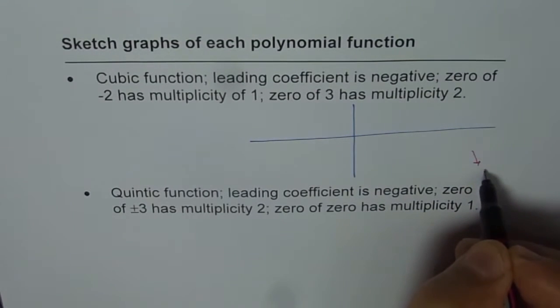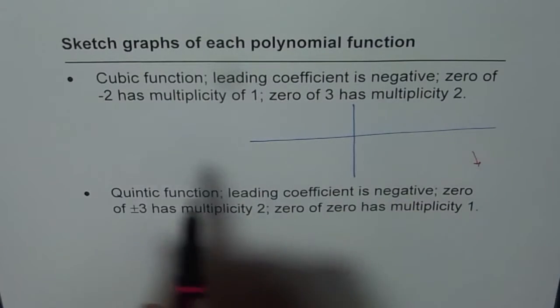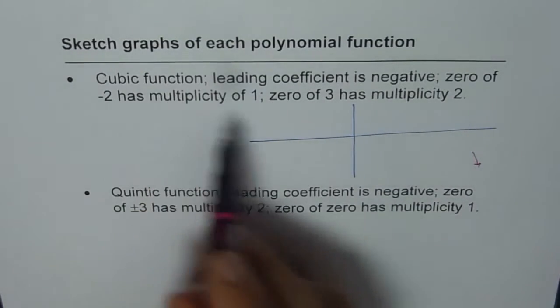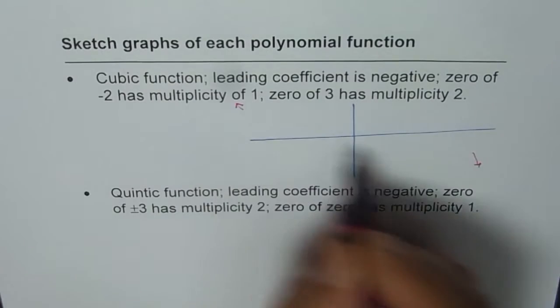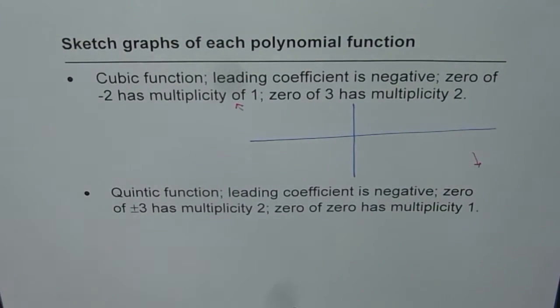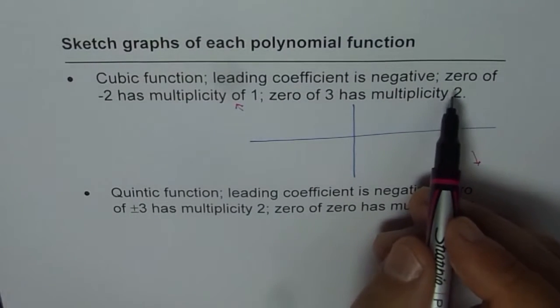So it has to go down this side. And since it is a cubic or odd degree function, there will be on a positive end. So that is the kind of end behavior. Leading coefficient gives us the end behavior.